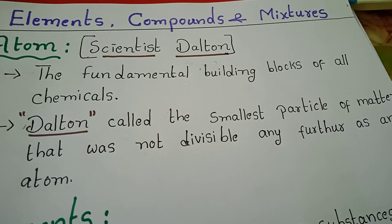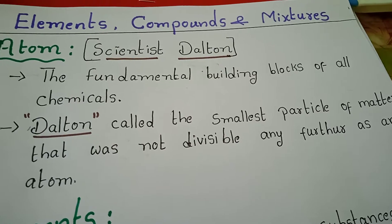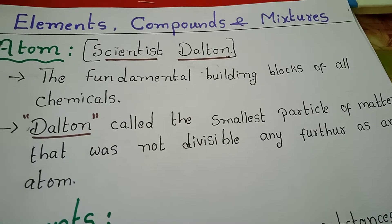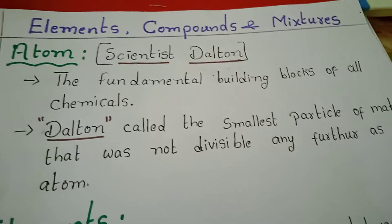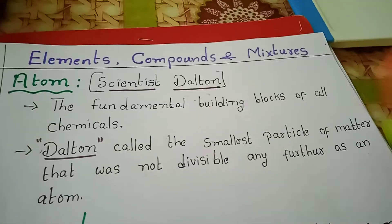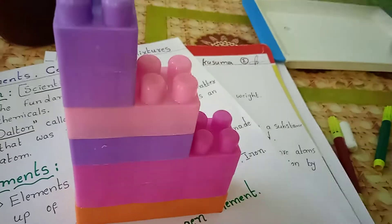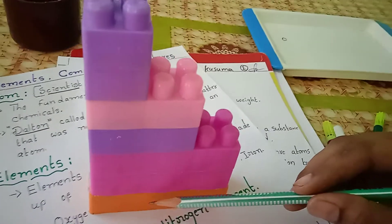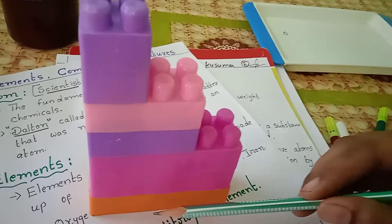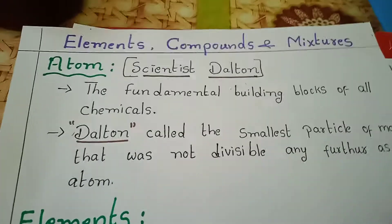Suppose a man breathes a gas like oxygen — oxygen is a chemical. Oxygen atoms come together to form oxygen. Suppose this one is one building block. These individual blocks — one, two, three, four, five — each block represents an atom. These atoms together form one chemical as a building block. In that same way, atoms combine together to form one chemical.